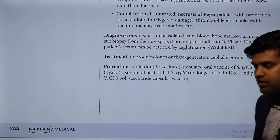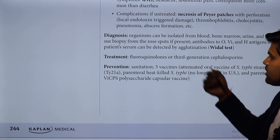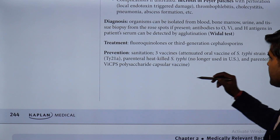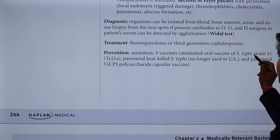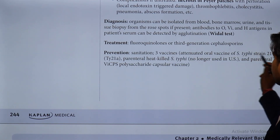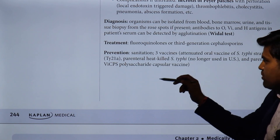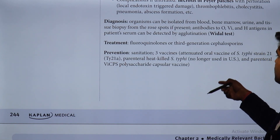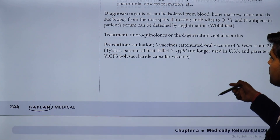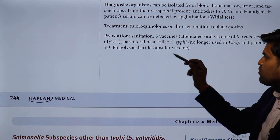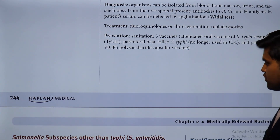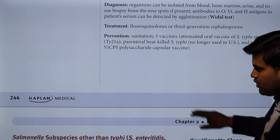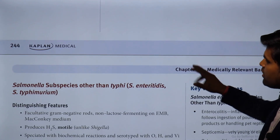Treatment is with fluoroquinolones and third-generation cephalosporins. Three vaccines are available: oral live attenuated Ty21a vaccine, parenteral killed vaccine (no longer used in the USA), and parenteral Vi capsular polysaccharide vaccine. This concludes the discussion of Salmonella typhi, moving next to non-typhoidal Salmonella.